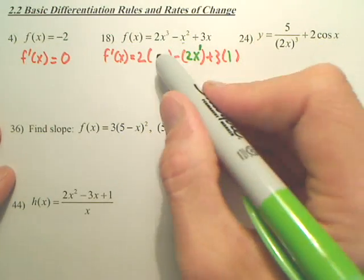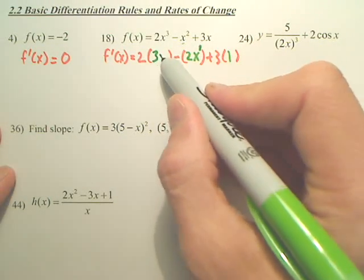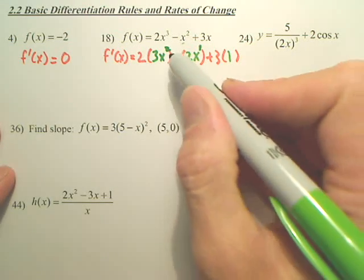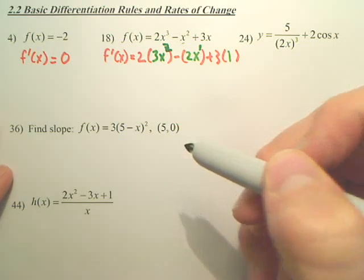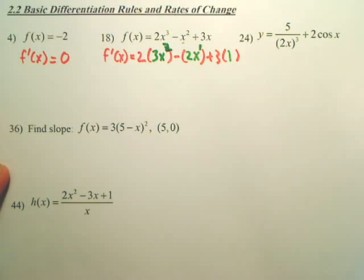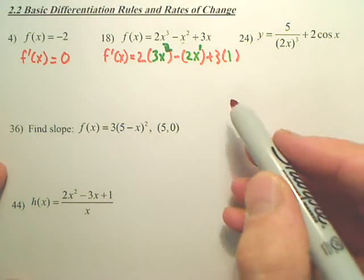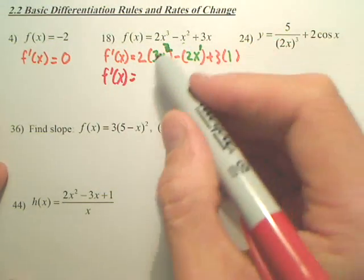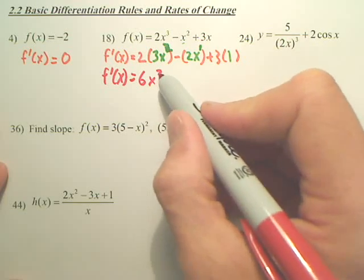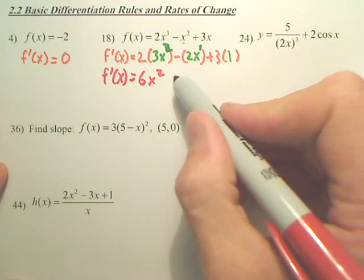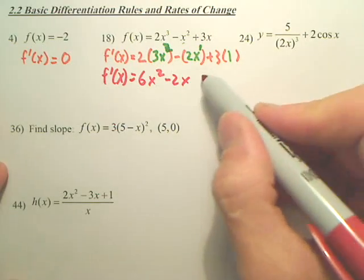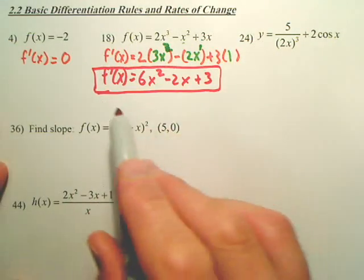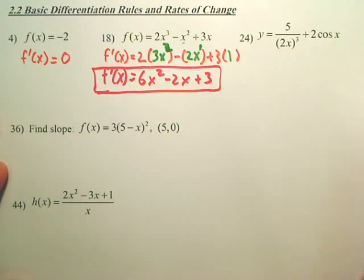For 3x³, take the 3, put it out front, keep x, and decrease the exponent by 1 to get 2. Simplify: 2 times 3 is 6x squared. The full derivative of the function gives us 6x² minus 2x plus 3.